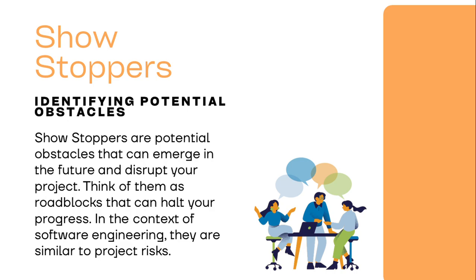The next and most important thing where most students go wrong is the showstopper. Many students think it refers to features — but no. A showstopper is basically the potential obstacles that can emerge in the future and disrupt your project. Think of them as roadblocks that can halt your progress. In the context of software engineering, this is similar to project risk.